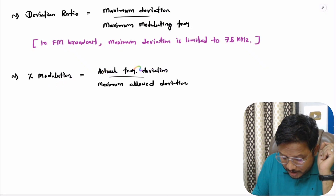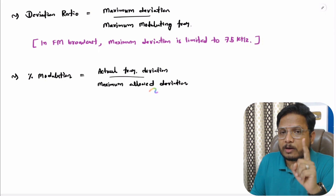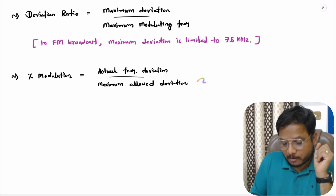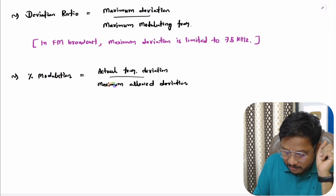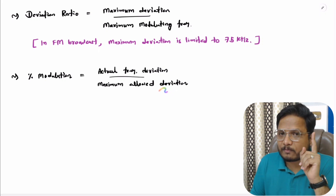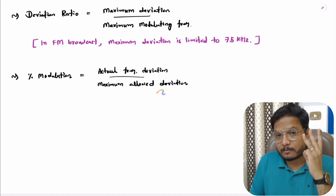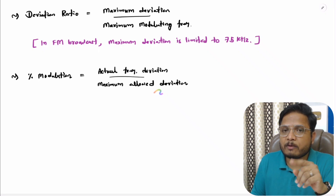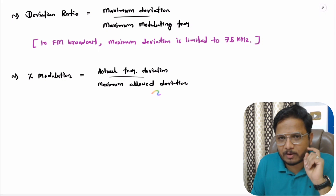Another important definition is percentage modulation, which is actual frequency deviation divided by maximum allowed deviation, multiplied by 100. In amplitude modulation, we also discussed percentage modulation — the modulation index multiplied by 100 gives the percentage modulation. In AM, there were three categories: under modulation, critical modulation, and over modulation, where over modulation meant percentage modulation greater than 100%, or modulation index greater than 1.